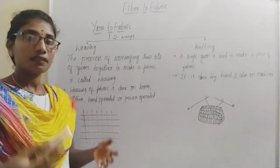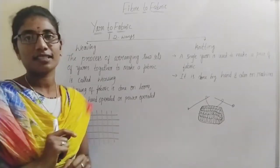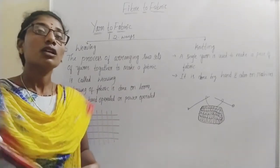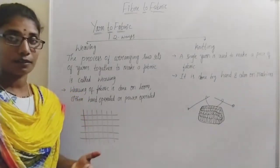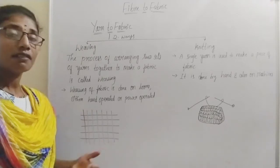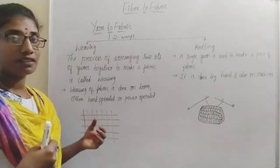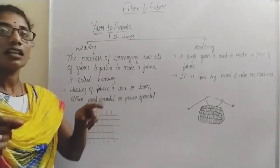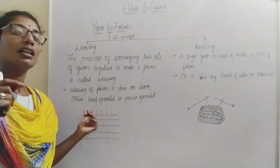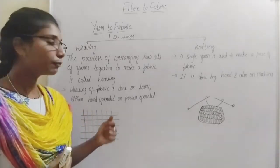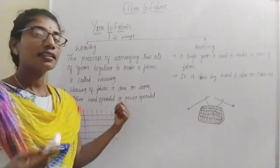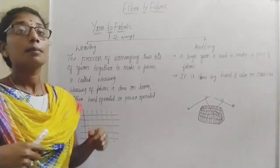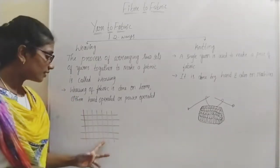The waving we have done now used paper, which is a very short piece, but for preparation of actual fabric we use very long yarns. This waving of fabric is generally done with the help of looms. Looms are used for preparation of fabric — either hand-operated looms or power-operated looms. Either power-operated or hand-operated looms are used for waving a fabric.